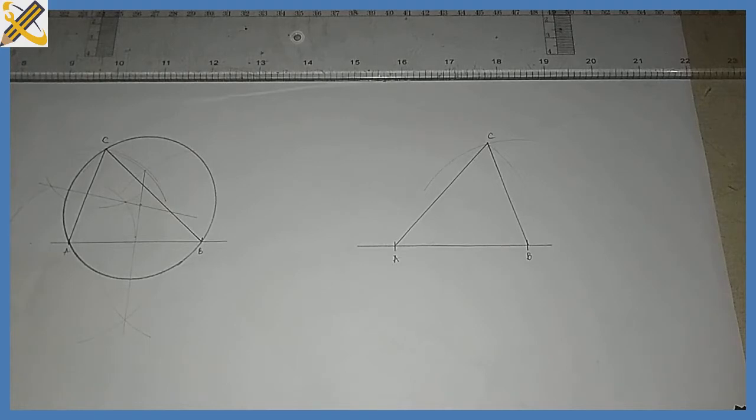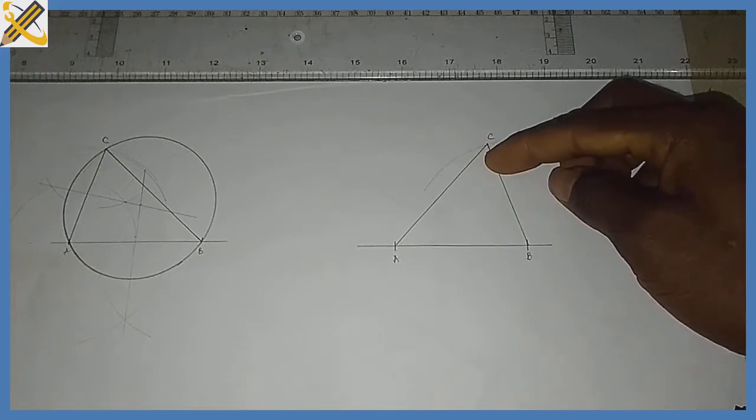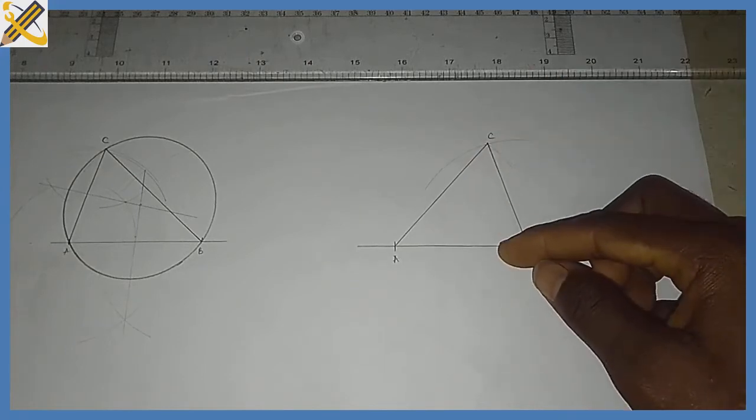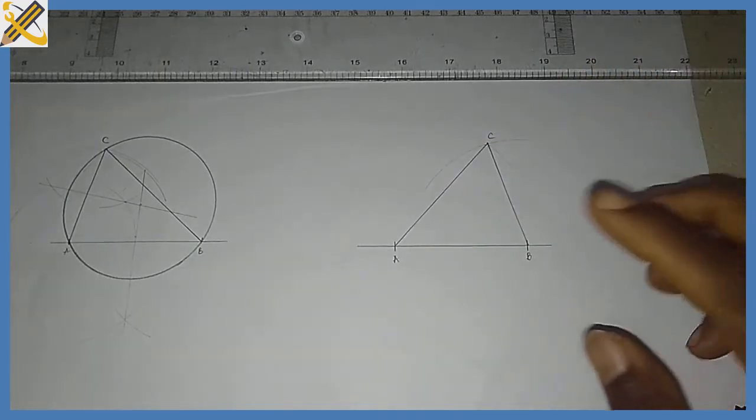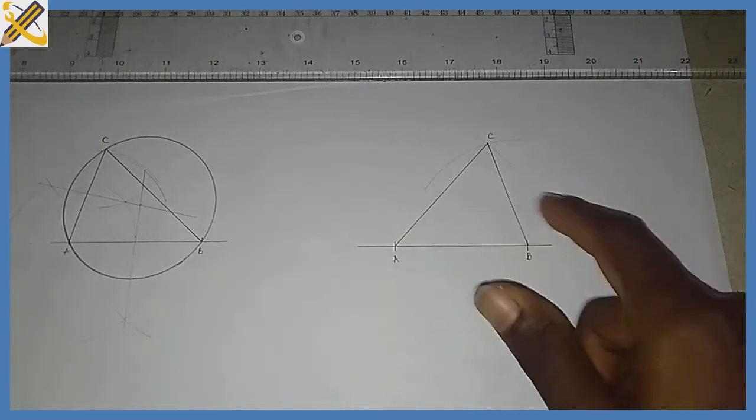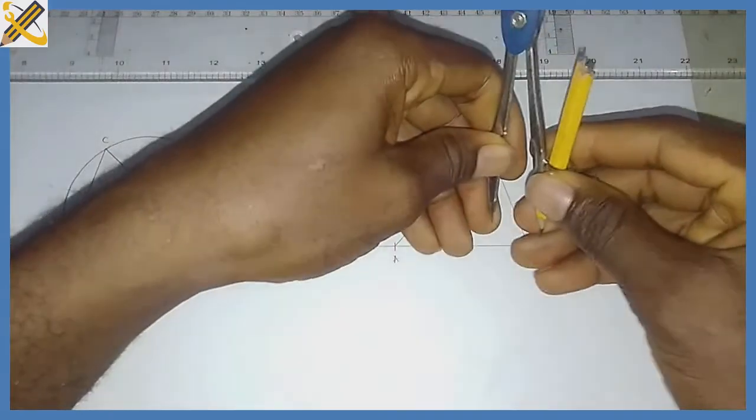I'm going to bisect any two angles. I have an angle here on point C, an angle here on point B, then an angle here on point A. But I'm just going to bisect any two, so I'm going to go for the angles on point A and point B. So how do I bisect them? Let me...